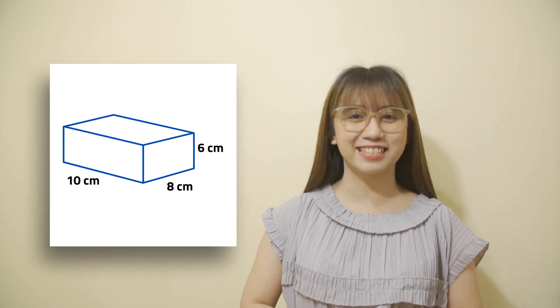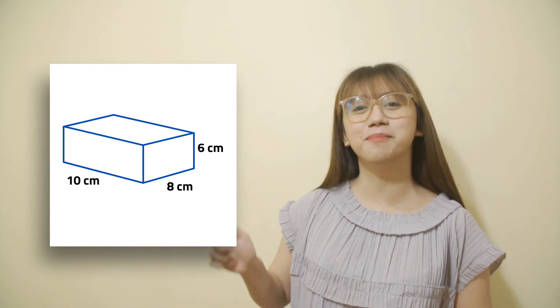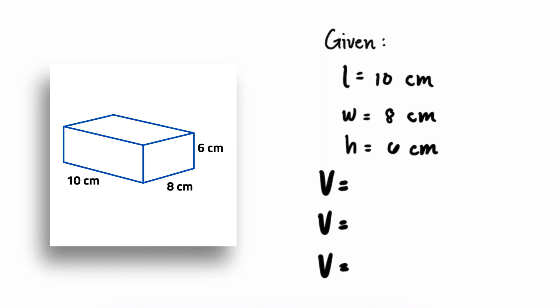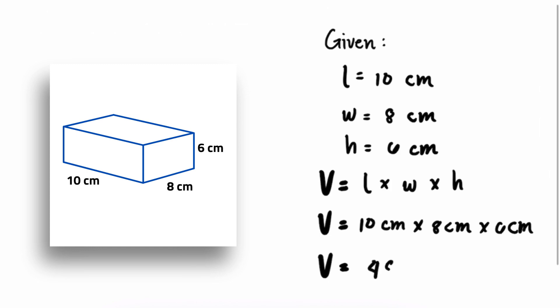Now that we know how to find the volume of a cube and rectangular prism, let's try to answer these questions. Are you ready? Let's go! Let's find the volume of the rectangular prism with the following dimensions: 10 centimeters by 8 centimeters by 6 centimeters. The given are: length equals 10 centimeters, width equals 8 centimeters, and height equals 6 centimeters. The formula is volume equals length times width times height. Substituting, the volume of this rectangular prism is 480 cubic centimeters.